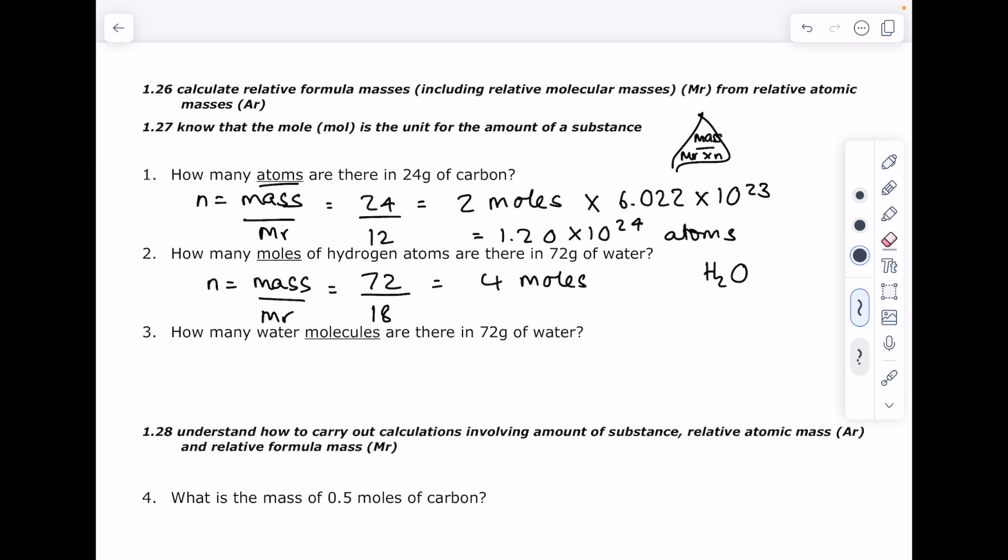So we know we have 4 moles of water, but because water contains 2 hydrogens per water molecule we simply need to multiply 4 by 2 to get 8 moles of hydrogen atoms.